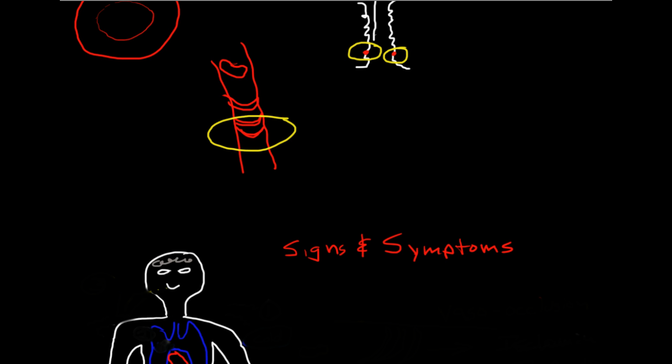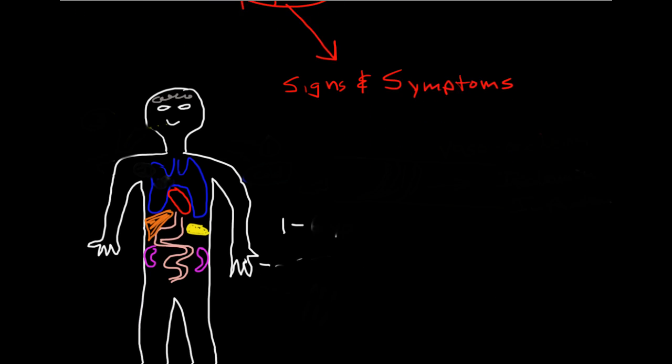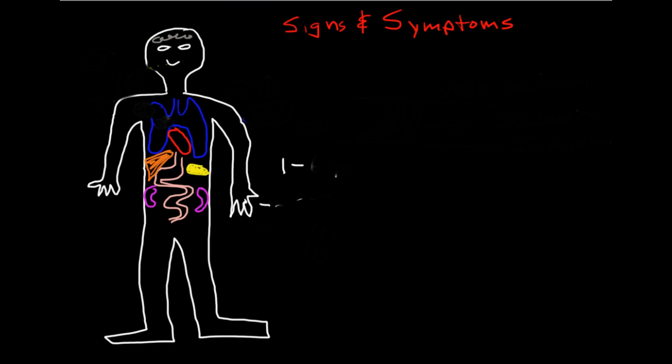Again, sickle cell disease is characterized by episodes of vasoocclusion caused by sickled cells getting hung up in small vessels. This causes the periodic signs and symptoms of the disease. What precipitates the vasoocclusive crisis?